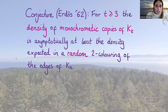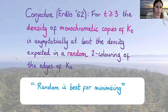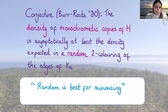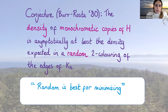So this is for triangles — why don't we think about general complete graphs? Erdős made a conjecture in 1962 which said: Goodman's theorem tells us the random colouring minimises monochromatic triangles; Erdős conjectured that in fact for any complete subgraph K_t, the density of monochromatic copies is minimised by the random colouring. About 18 years later, Burr and Rosta made a much bolder conjecture: in fact this is true for any graph H. So for any graph H, you can't make fewer monochromatic copies in a colouring than in a random two-colouring.